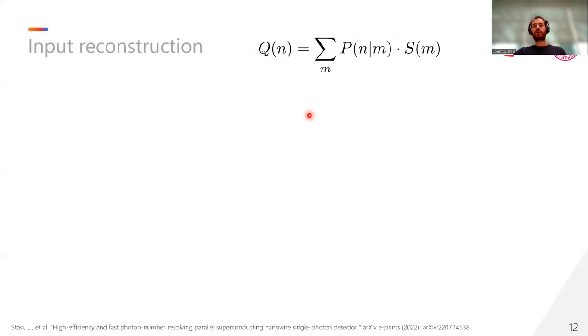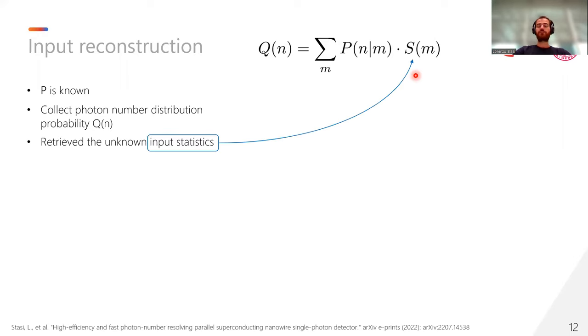We also evaluated the possibility to retrieve the light statistic that we are sending, namely S(m). To do that, we characterize our detector, so we obtain our P matrix, then we shine our unknown light, and we collect the photon number distribution probability that our detector generates, and then in order to retrieve S(m), we need to invert this equation. In order to do that, P has to be a square matrix in order to be invertible. Thus, to do that, we have to neglect all the photon number events that have a number of photons which is greater than the number of pixels. But by doing this truncation, we are only able to reconstruct light statistics in which those events are negligible.